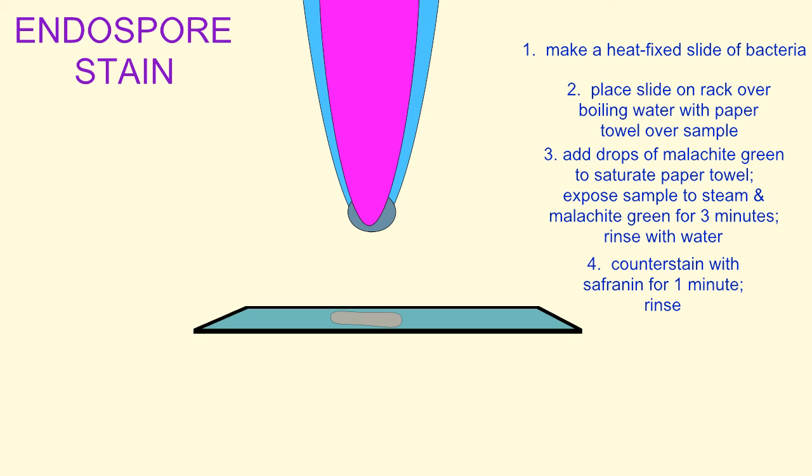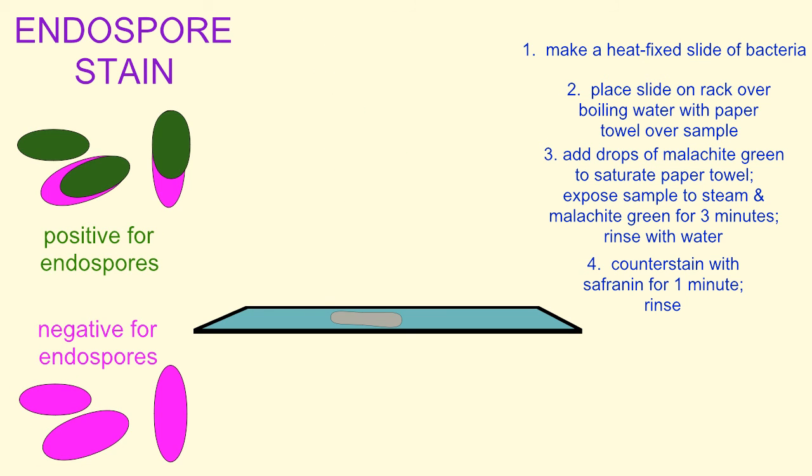And so if spores are present, either green spores will be evident without cytoplasm if the cells dissolve, or the pink cell cytoplasm will include a green staining spore. This would be a positive endospore test result.